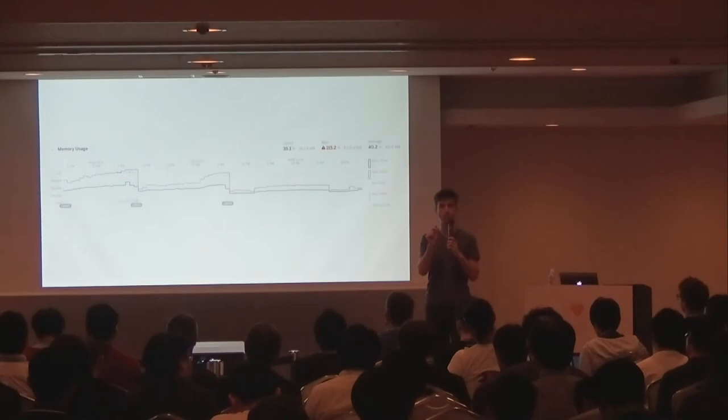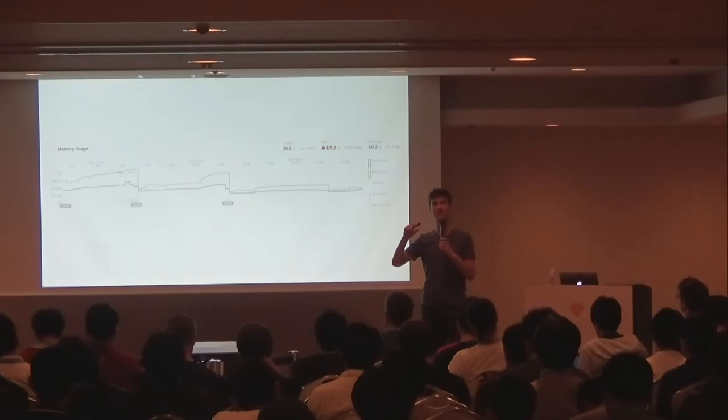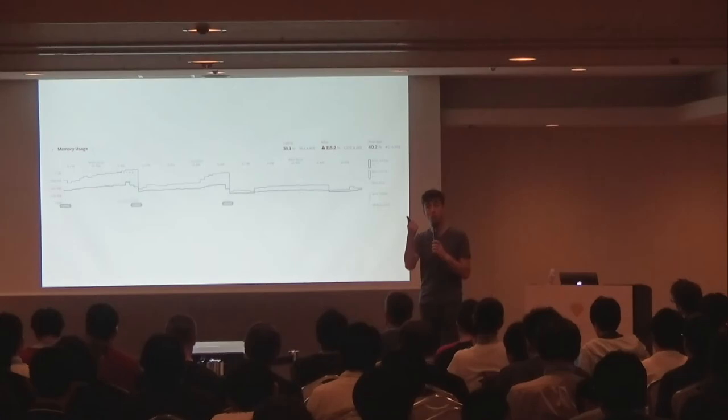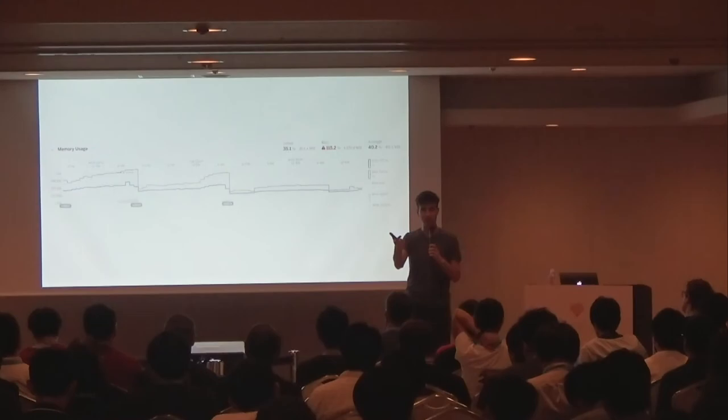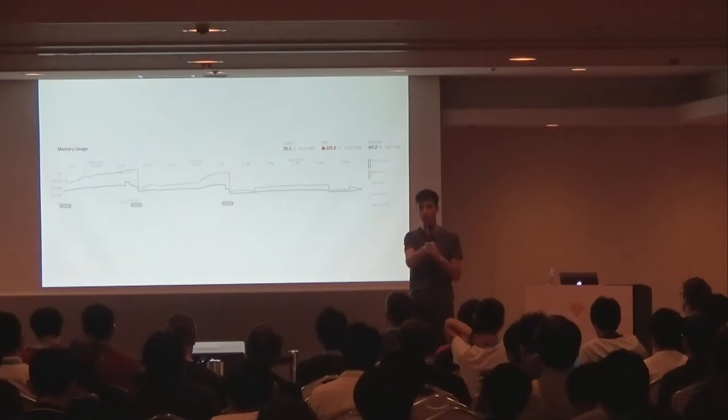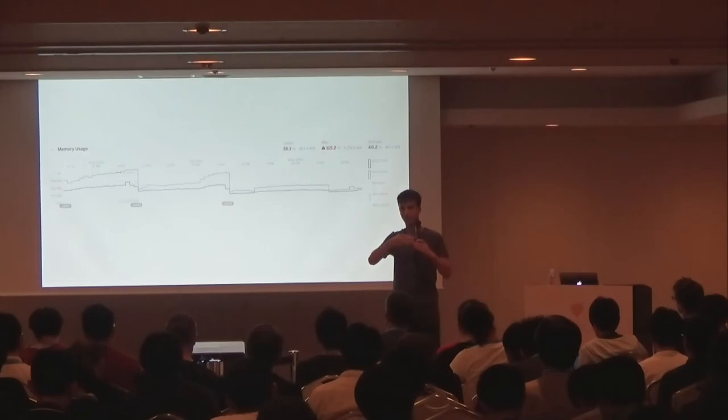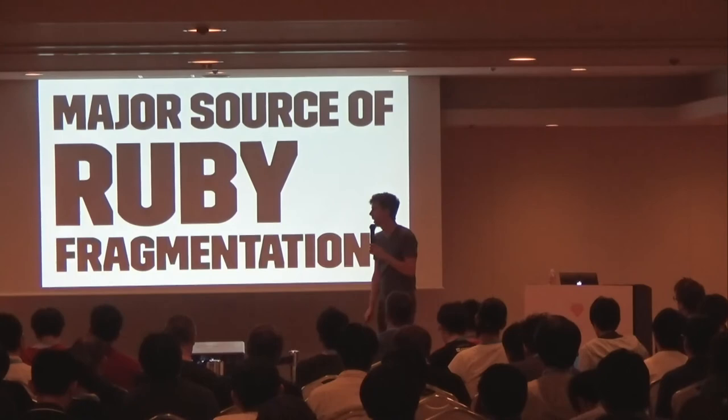That's probably the most extreme example I've ever seen of MALLOC_ARENA_MAX fixing memory problems, but it is one of those magic settings which can really make a difference if you are creating many threads, running a multi-threaded Ruby application, or doing a lot of IO. If you're not doing a lot of IO, the Ruby threads are not running at the same time, so they can't contend for the main memory arena — they don't lock, they don't create arenas.